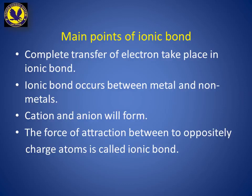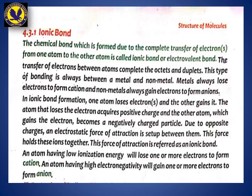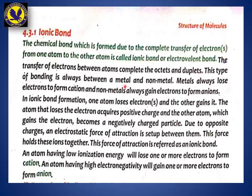If there is a sharing of electrons, that is a covalent bond; if there is a transfer of electrons, that is an ionic bond. Now, the book definition: the chemical bond which is formed due to the complete transfer of an electron from one atom to another atom is called an ionic bond, or electrovalent bond. This transfer follows the octet and duplet rules — 8 electrons in the outer shell for octet, and 2 electrons for duplet.